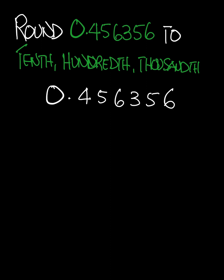The first thing we're going to do is identify the decimal point, and the decimal point is right here. The next number after the decimal point, whether it's 0 or not, is important. Note that if we're doing significant figures and the number after the decimal point is 0, then that 0 is not important — but here, whether it's 0 or not, it is important. So now we can identify that.